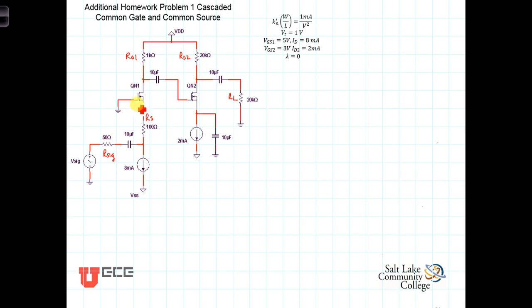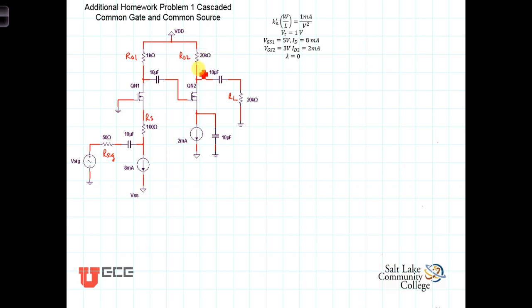On the first stage, the transistor's gate is grounded, and the signal to be amplified is connected through — here it's just the source resistance of the signal — but we also have a source resistor connected to the source of the first transistor. The second transistor has the gate tied to the drain of the first through a DC blocking capacitor. This second transistor is in a common source configuration with the gain resistor RD2, a 20 kilohm resistance.